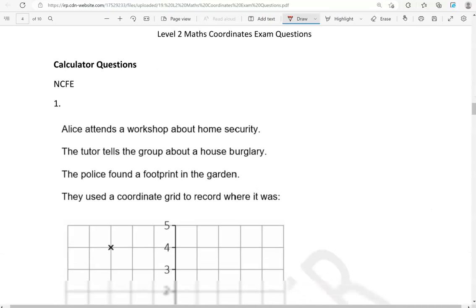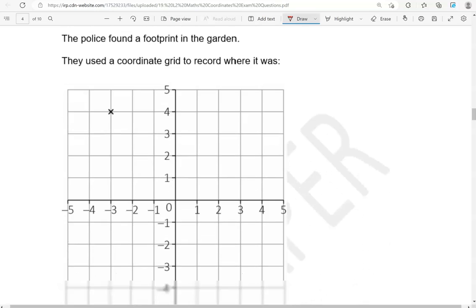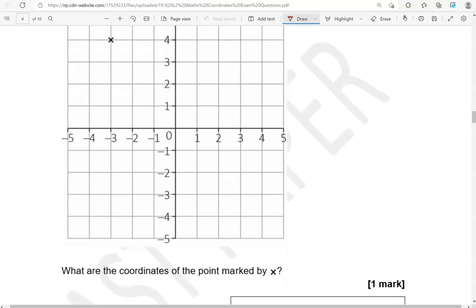We're now moving to the calculator questions. Alice attends a workshop about home security. The tutor tells the group about a house burglary. The police found a footprint in the garden. They used a coordinate grid to record where it was. What are the coordinates of the point marked by x? This is the point.